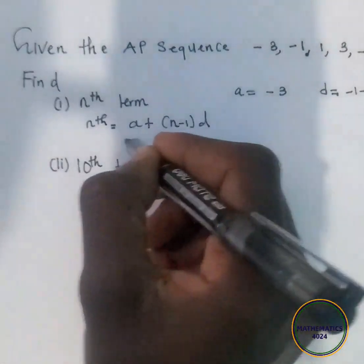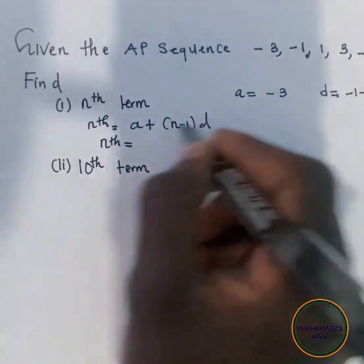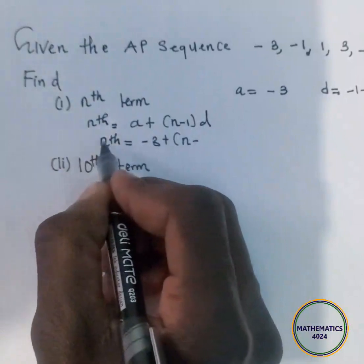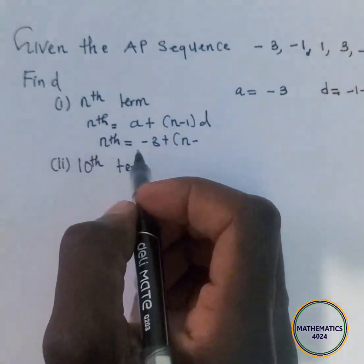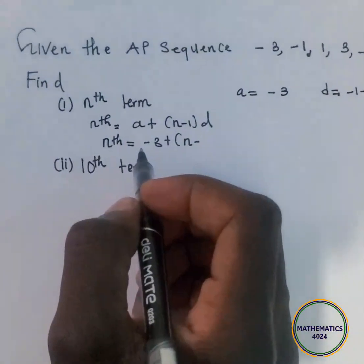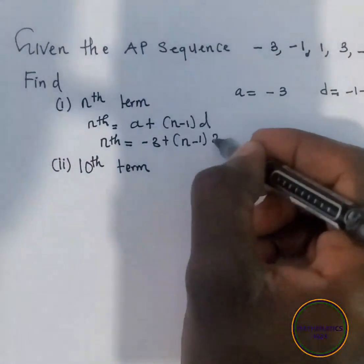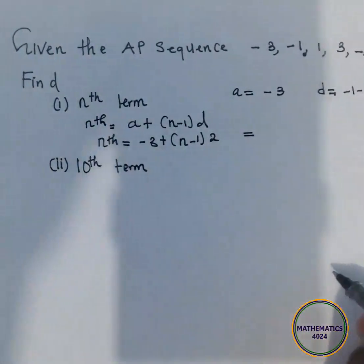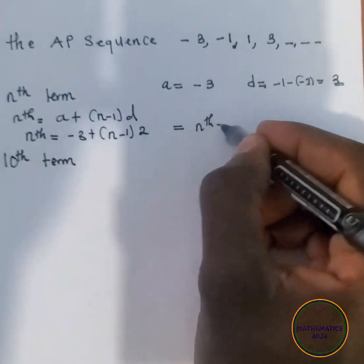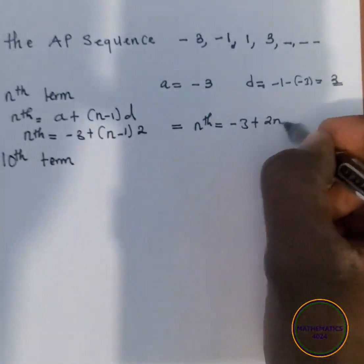So proceed, and say the nth term is equal to a is negative 3, plus n will remain the same because we are looking for the nth term, minus 1, d is 2. The nth term, we proceed and say, is negative 3 plus 2 times n, 2n minus 2.